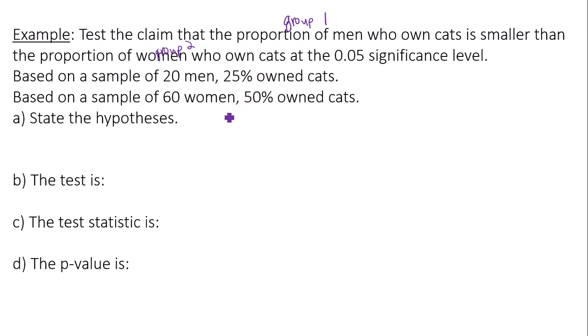We want to state the hypotheses. So I have two hypotheses, the null hypothesis and the alternative hypothesis. The null hypothesis I want to write in terms of men or group one on the left. The proportion of men that own cats will be on the left. Then the proportion of women that own cats will be on the right.